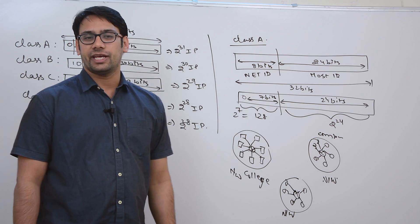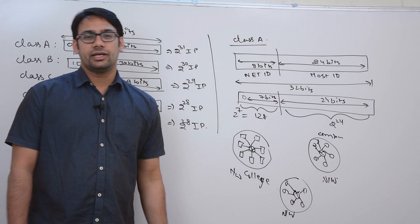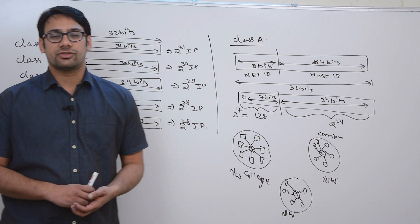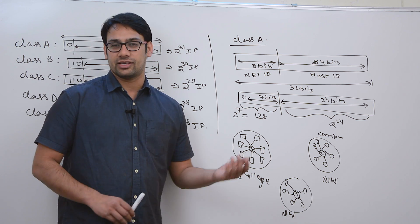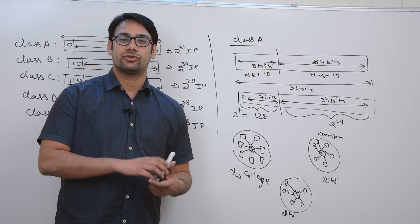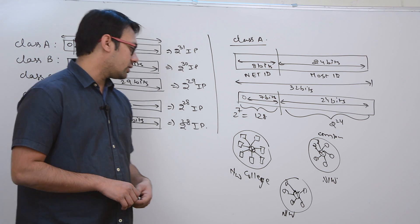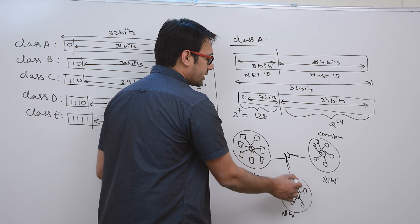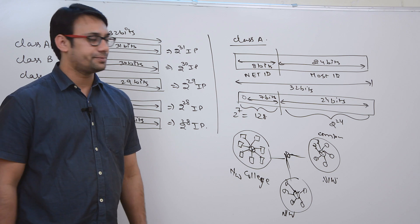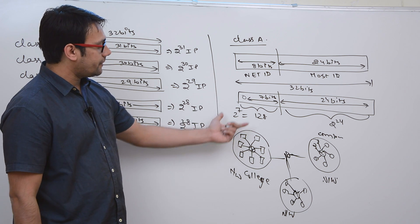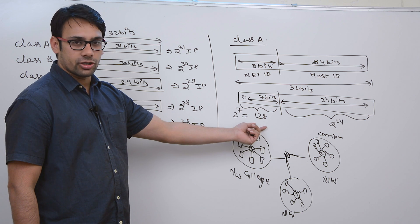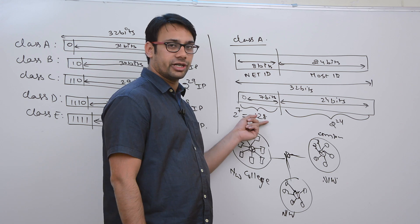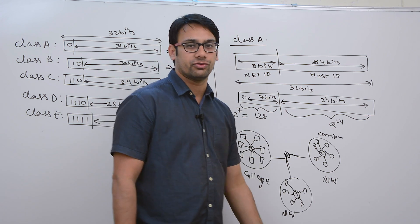Class A might be used for military networks, but practically no one uses that many hosts, so class A IP addresses result in a waste of many host addresses. These networks are connected to each other, creating the internet. In class A, with 7 bits we can have 2 raised to power 7 networks, and in every network there are 2 raised to power 24 hosts.